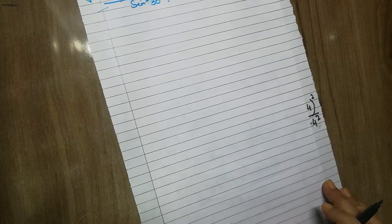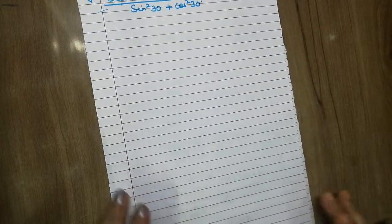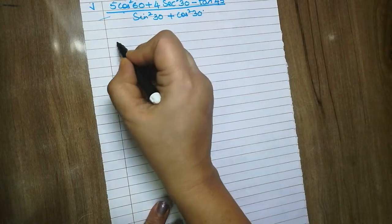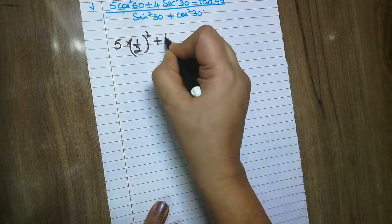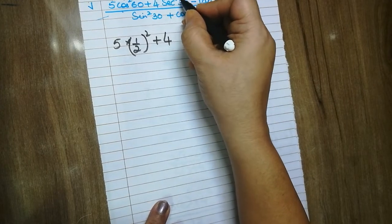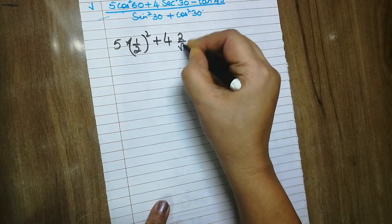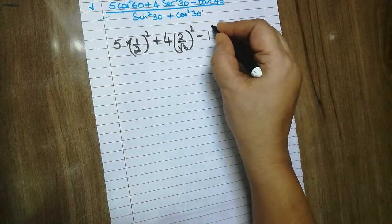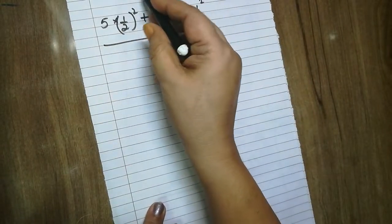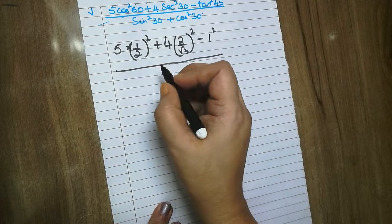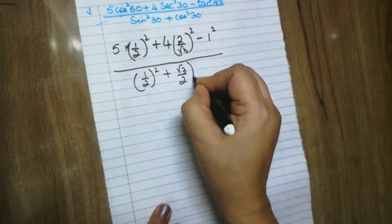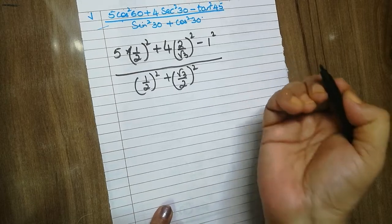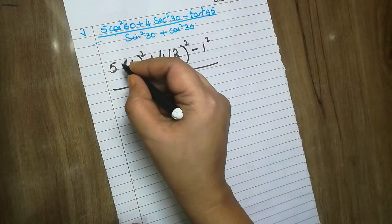Now the 5th sum of the first domain: 5cos²60 + 4sec²30 − 1, over sin²30 + cos²30. Substituting: cos 60 = 1/2, so cos²60 = 1/4; sec 30 = 2/√3, so sec²30 = 4/3; and sin²30 = (1/2)² = 1/4; cos²30 = (√3/2)² = 3/4. Practice more sums so these values stay in your mind to work fast.